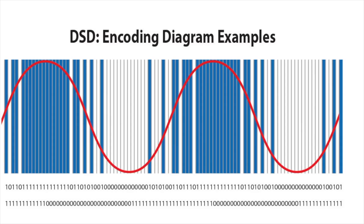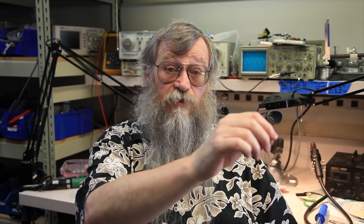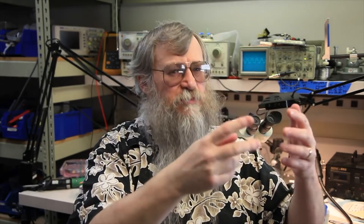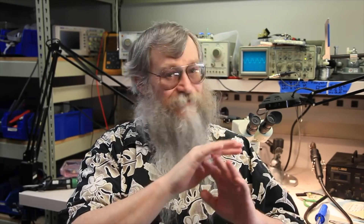If you look at a DSD signal on a graph, it looks a lot like your analog waveform if you just fuzz your eyes just a little bit. One of the misconceptions about DSD is that it's high-rate PCM, but that's not quite true. In PCM, if you have 16 bits, that's approximately 96 dB of signal-to-noise ratio, each bit being approximately 6 dB. But one bit gives you only 6 dB of signal-to-noise — that's garbage.